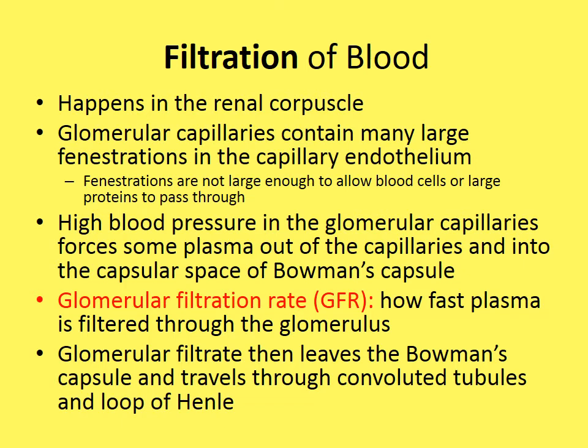The glomerular capillaries contain many large fenestrations — tiny holes — in the capillary endothelium. These holes are not large enough to let blood cells or large proteins through; only plasma passes through. High blood pressure in the glomerulus forces plasma out of the capillaries into the Bowman's capsule. Glomerular filtration rate (GFR) measures how fast plasma is filtered, and glomerular filtrate then travels through the tubules, becoming tubular filtrate.